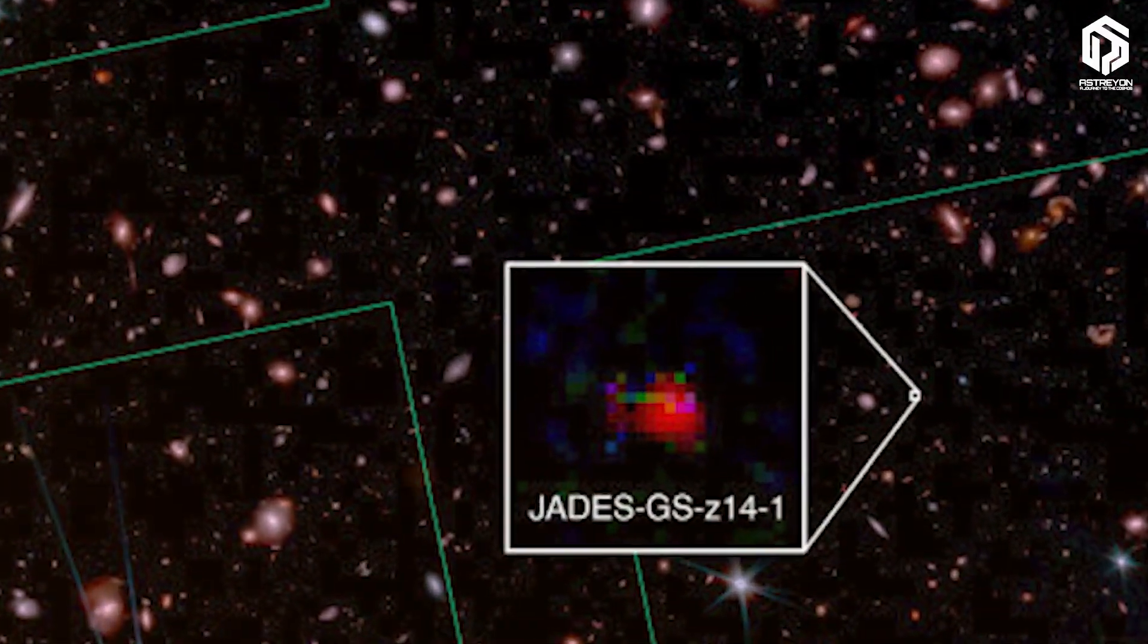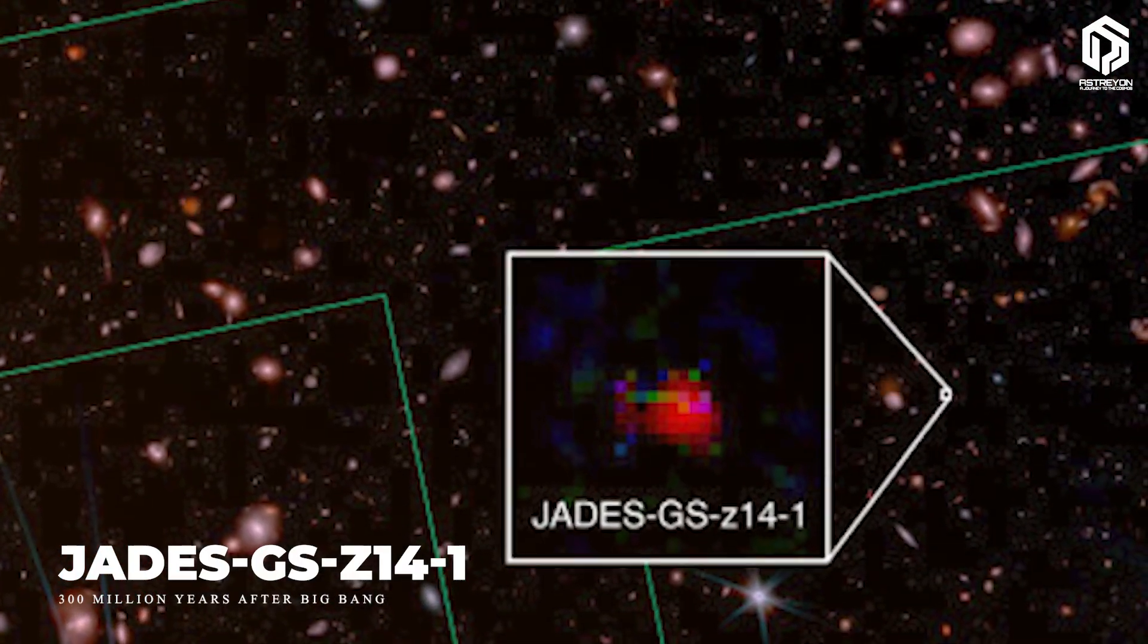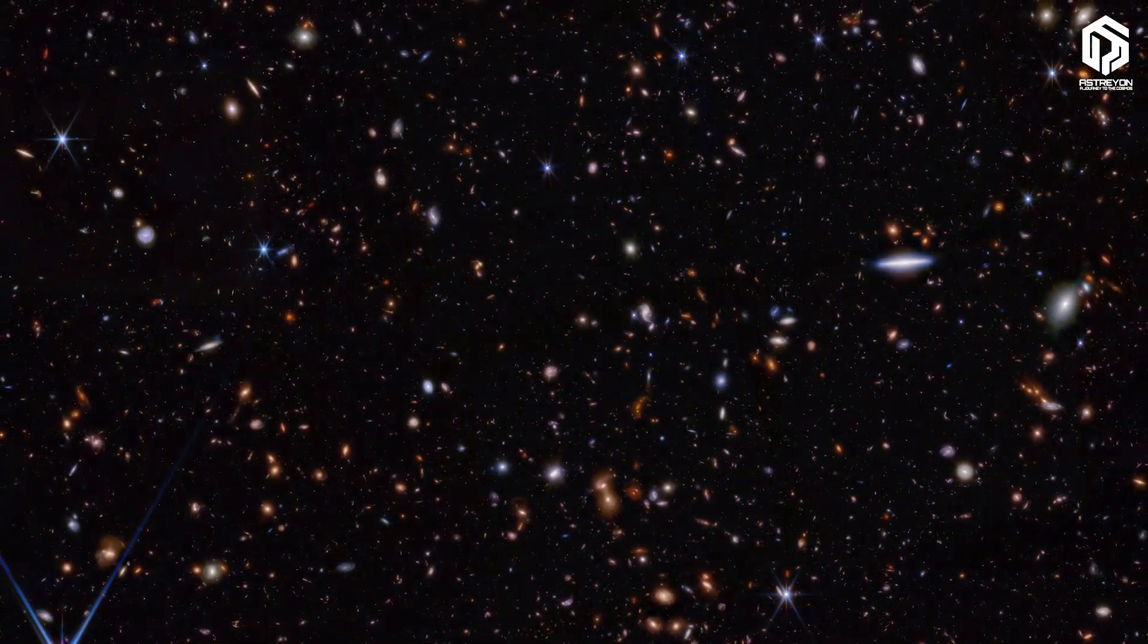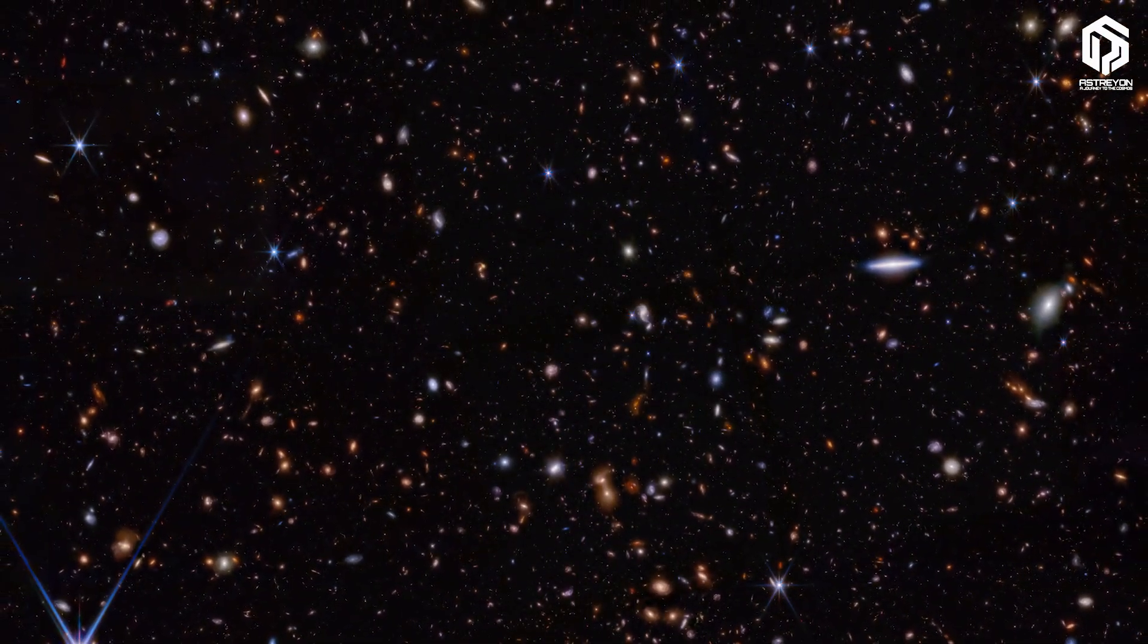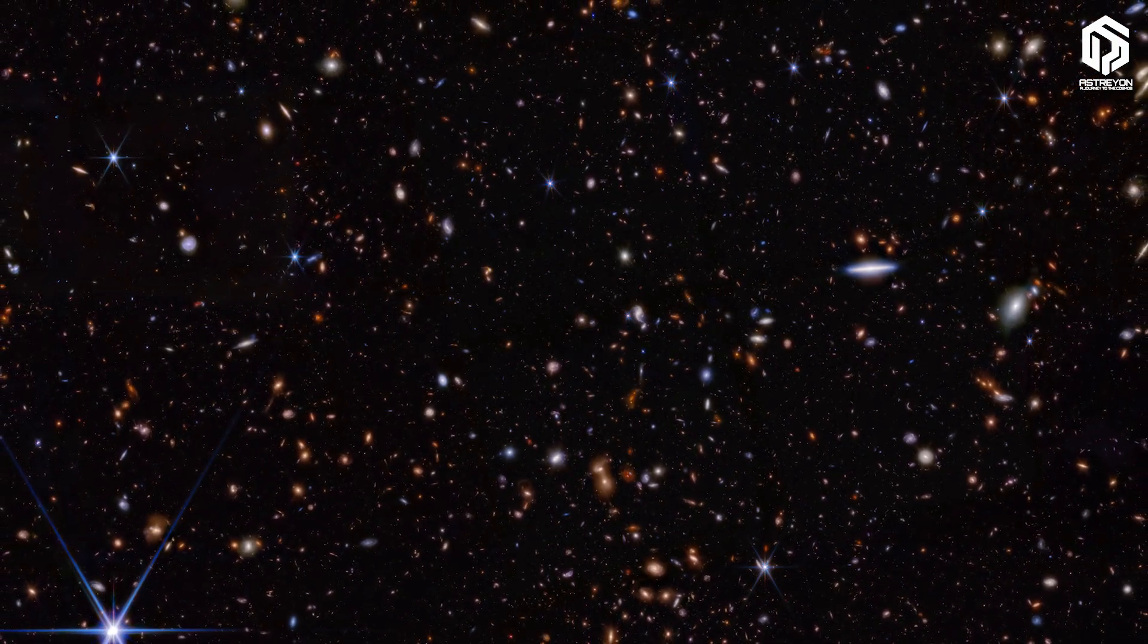And then there's JADES-GS-z14-1, with a redshift of about 14.18, around 300 million years after the Big Bang, which is smaller, but its brightness indicates a star formation burst, where stars are born at high speeds and produce ultraviolet light.